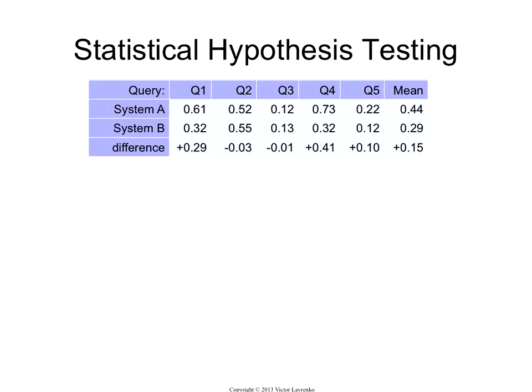So the basic idea of statistical hypothesis testing is you're going to look at the performance of your systems on the individual queries before you did the averaging. So let's say I have five queries. I have system A that I built. I have the baseline system B.